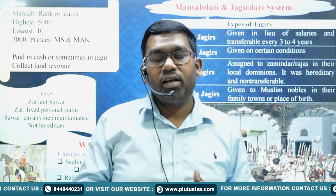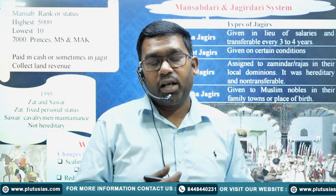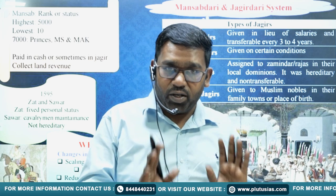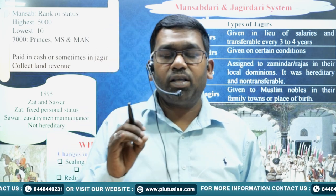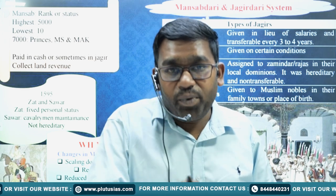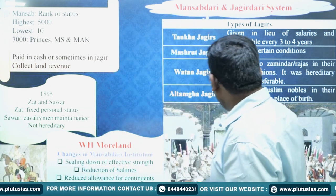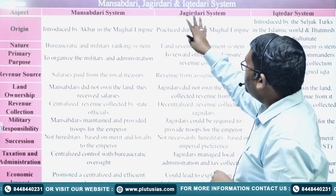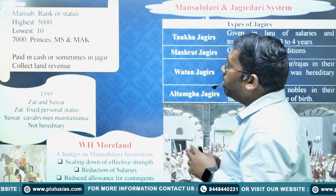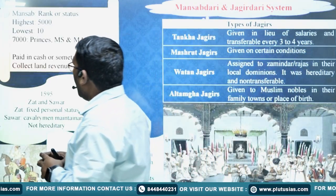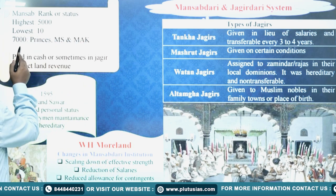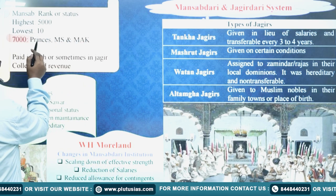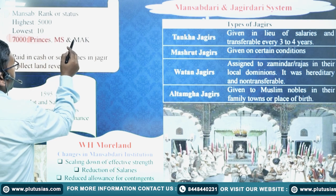Ranks were determined from 10 onwards. The minimum Mansab was 10 and the maximum Mansab was 5,000. Some people could get 500, some 2,000, some 3,000, or 5,000 Mansab. But the real highest Mansab given was 7,000, which was given to princes, and also to select individuals like Mansingh and Mirza Aziz Koka.